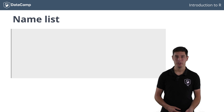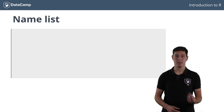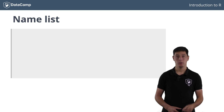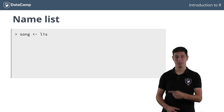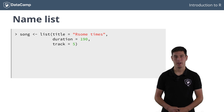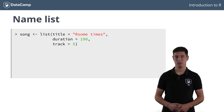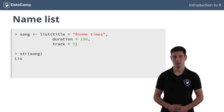As was the case with vectors, you can also directly specify the names in a list at the time of creation. To create the exact same variable song, you can use this command. You've already figured out that the standard way of printing the contents of a list is pretty bulky. I suggest you use the str() function for this.